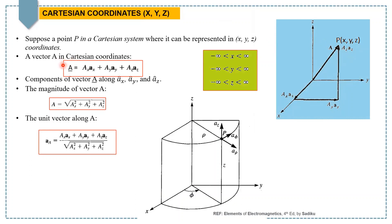We can write vector A in Cartesian coordinates as A vector equal to the first term plus the second component plus the third component. We can also take the magnitude of this vector as A equals the square root of Ax squared plus Ay squared plus Az squared. We can find the unit vector along A, which is equal to the complete vector divided by its magnitude.